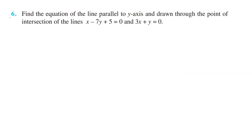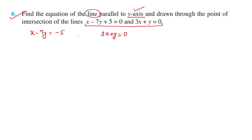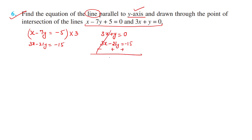Question 6: find the equation of the line parallel to the y-axis drawn through the point of intersection of the lines x - 7y = -5 and 3x + y = 0. First, we find the intersection point. Multiply the first equation by 3: 3x - 21y = -15.